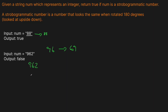If we look at 692, turning it around wouldn't work because 2 and 9 are not flippable. So this question boils down to whether pairs of numbers are flippable, and it has to work for all pairs. Let's think about which numbers are flippable: 0 is flippable and fine, 1 is also flippable, and 8 flipped upside down is still 8.